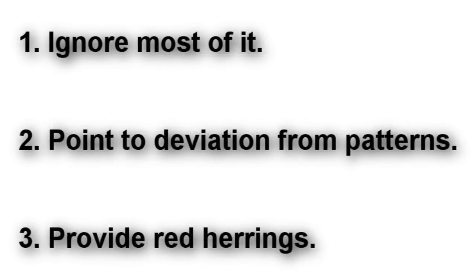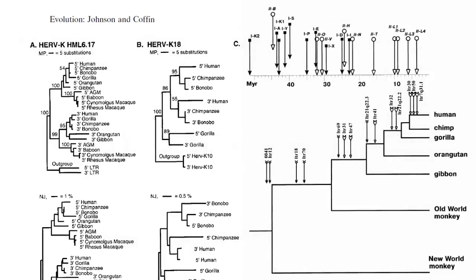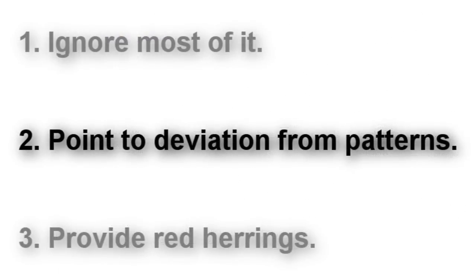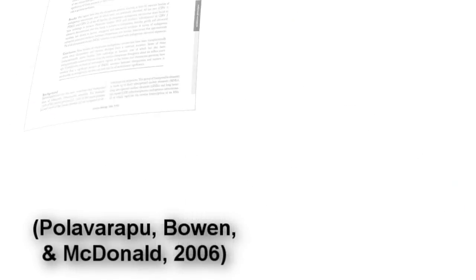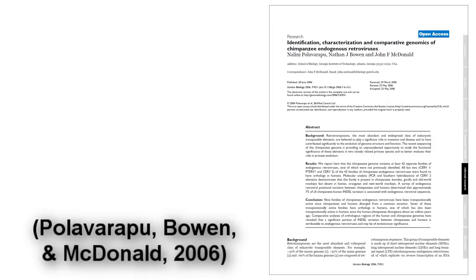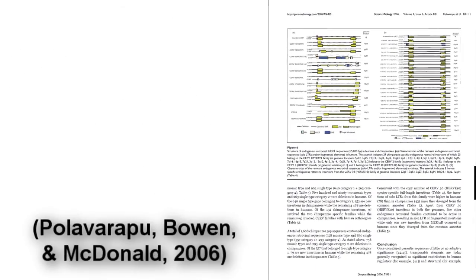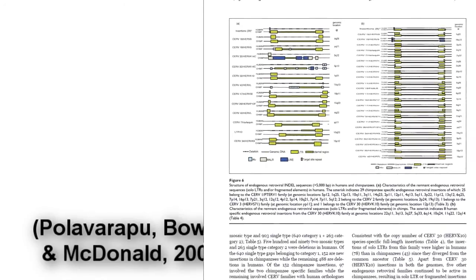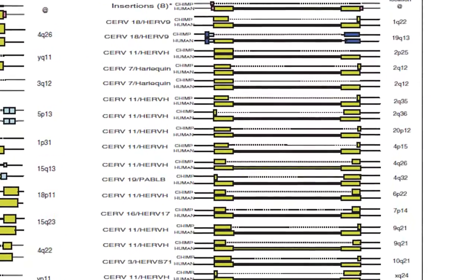There are three common responses to ERV evidence by creationists. The first is to ignore most of it, most notably the patterns of distribution and mutation. The second is to use deviations from these patterns they fail to address as justification for dismissing ERVs outright. For example, they ignore viral transfer and inter-element recombination and conversion, and state that the few lineage-specific PTRVs with uncharacteristically high LTR-LTR divergence ratios completely invalidates the second layer of evidence. What they conveniently overlook is that such deviation is to be expected given the complexity of biological systems, and that it's the patterns they ignore that provide some of the strongest evidence for the evolutionary model.